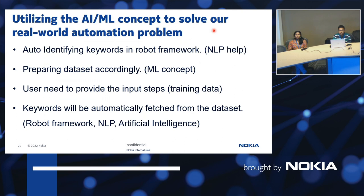Why are we dealing with AI and ML concepts? Basically, it is to solve our real-world automation problem. Some solutions for these problems are: auto-identifying keywords in robot framework, where natural language processing help is used. Also, preparing datasets accordingly, which involves the machine learning concept. The user needs to provide input steps — the training data — as per requirement. Keywords will then be automatically fetched from the dataset. The combination of robot framework, NLP, and artificial intelligence smoothens the user experience.